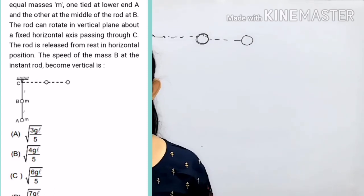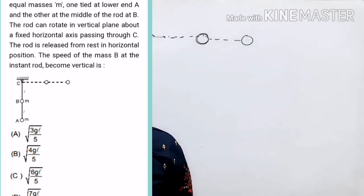A weightless rod of length 2L carries two equal masses M, one tied at lower end A and the other at the middle of the rod at B. The rod can rotate in vertical plane about a fixed horizontal axis passing through C. The rod is released from rest in horizontal position. Find the speed of mass B at the instant the rod becomes vertical.